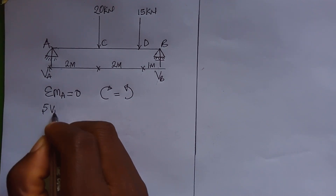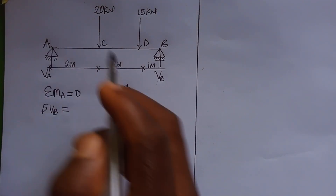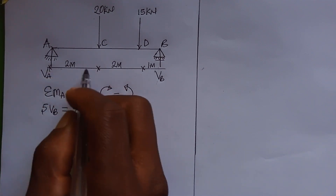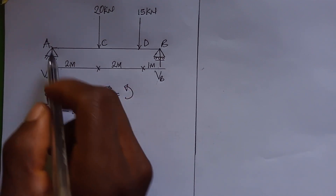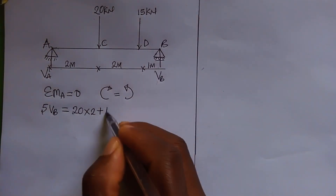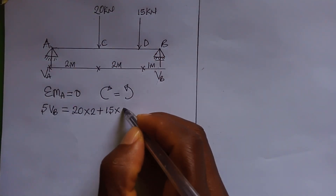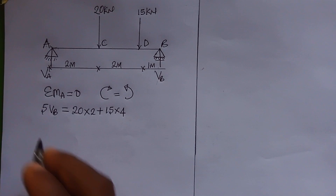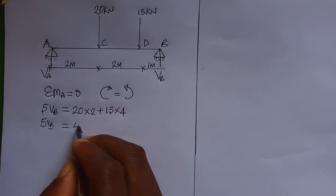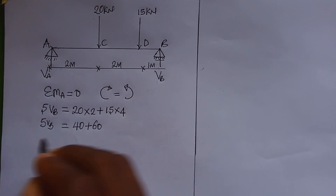So 5 multiplied by VB equals all the clockwise forces: 20 multiplied by the distance of 2 meters from point A, plus 15 multiplied by the distance of 4 meters from point A. Therefore 5VB equals 20 × 2 = 40, plus 15 × 4 = 60.